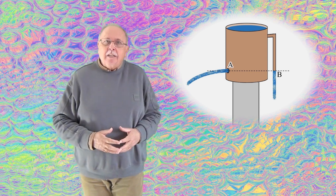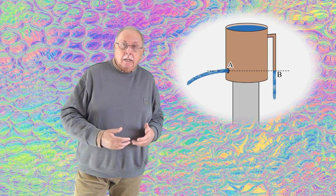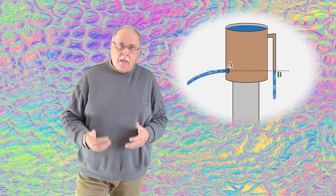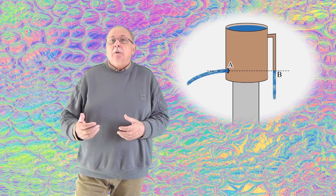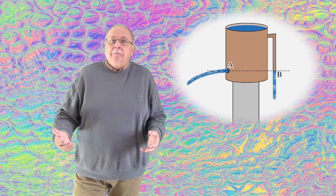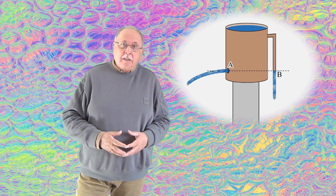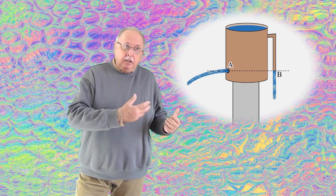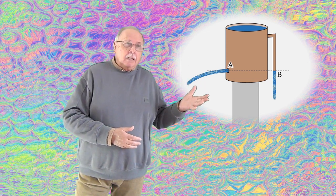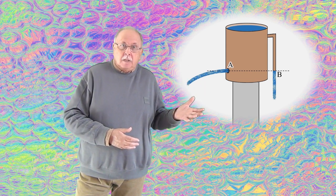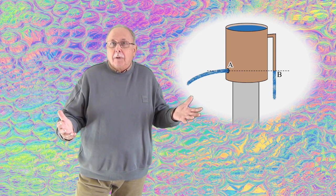Gura de ieșire a tubului este notată în desen cu B și se găsește la același nivel cu orificiul A și are același diametru cu orificiul A. Și întrebarea este unde are apa debitul de ieșire mai mare, în A sau în B? Debitul înseamnă cantitatea de apă care iese în unitatea de timp, de pildă pe secundă. Și întrebarea se referă, bineînțeles, la timpul cât curge apă și prin tub.